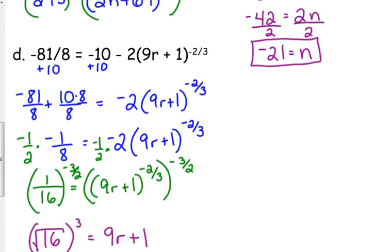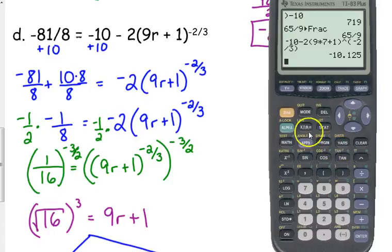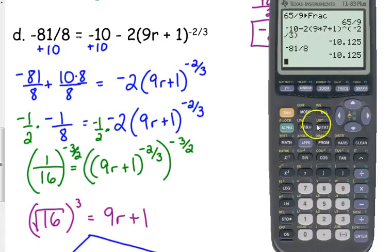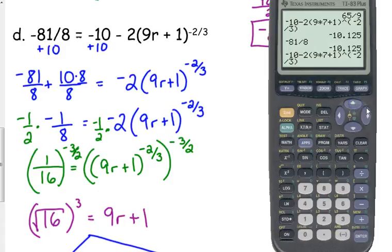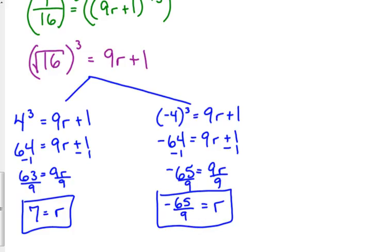Especially if you get two solutions, you should check them. So go back to the beginning, negative 10 minus 2, parentheses, 9 times 7 plus 1 to the parentheses, negative 2 over 3. I think that's right. I'm sure that's negative 81 over 8. It is. And then I've got to go back in and try negative 65 over 9. And that works as well. To be honest, most of the time with these rational exponents, the solutions, we don't have many that we throw out on the rational exponents. It's mostly just with the square roots that you have solutions that you throw out. But I'd still check them. I'd still check these, because you never know.